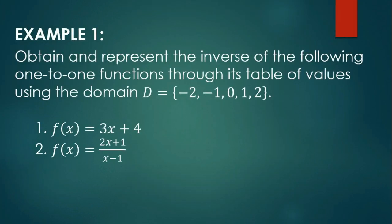Example number one: obtain and represent the inverse of the following one-to-one functions through its table of values using the domain D equal to negative two, negative one, zero, one, and two. For the solution, watch this video.